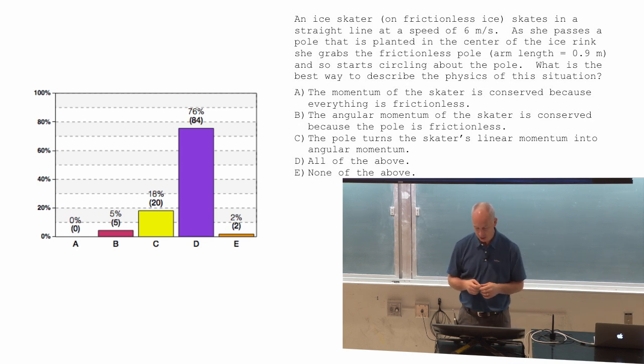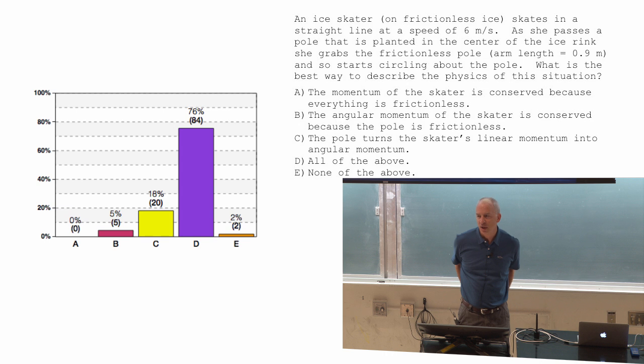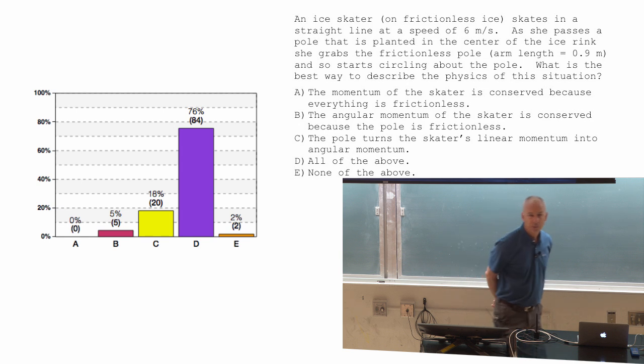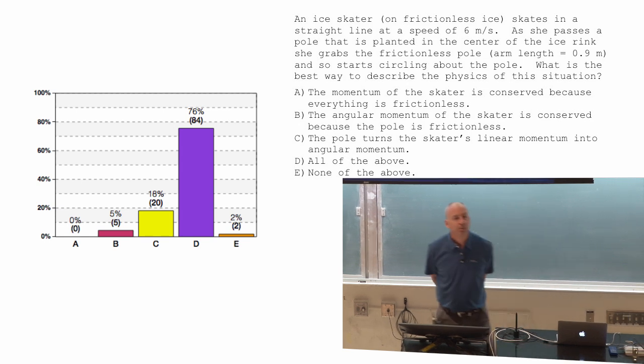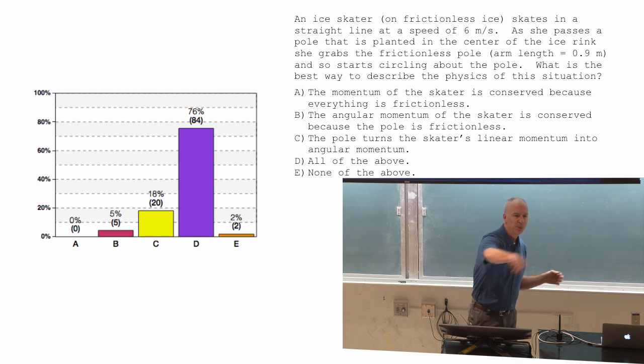But a lot of you picked all of the above. So that would rule that out kind of right off the bat. The momentum, her momentum is not constant, because there's an outside force, the pole. The pole doesn't have any friction force on her. But it is the thing, if she holds onto the pole, it is the thing pulling her toward the center of the pole and keeping her going in a circle.